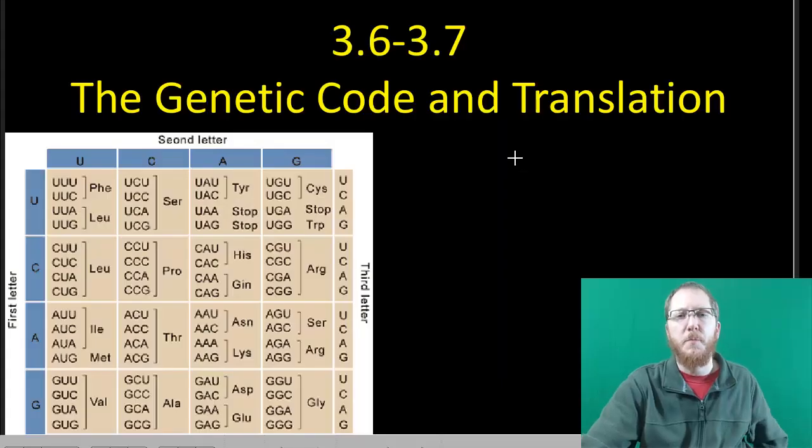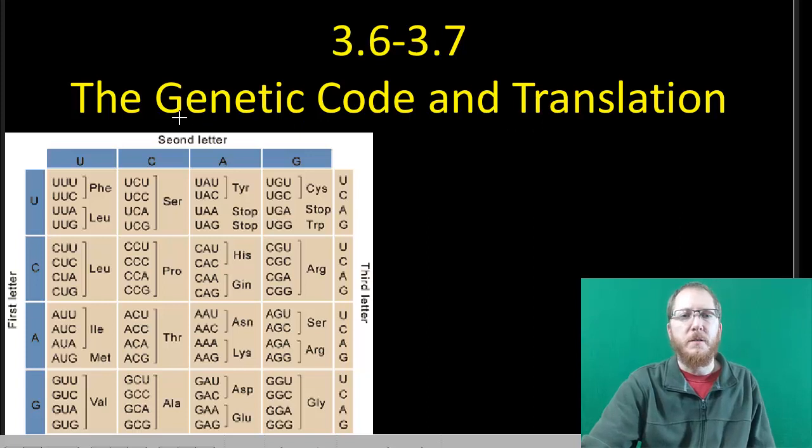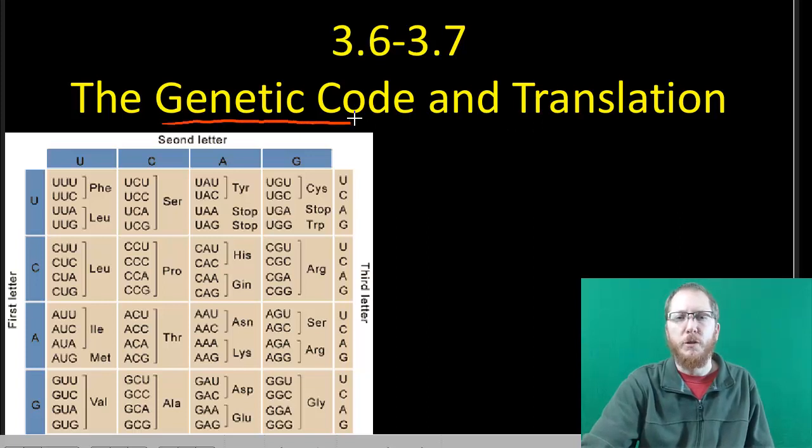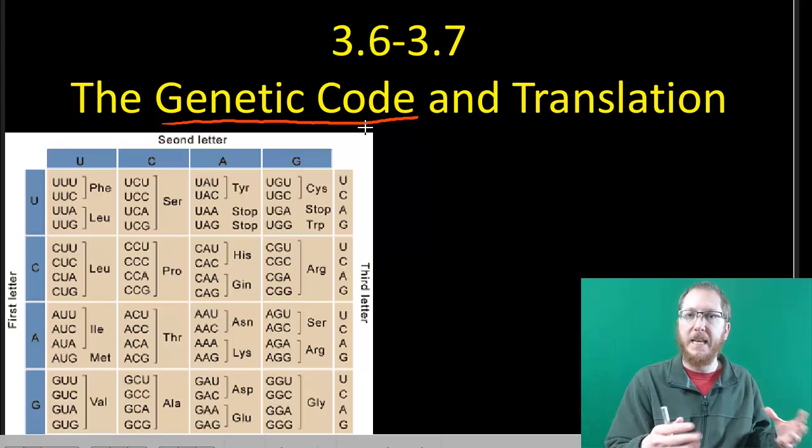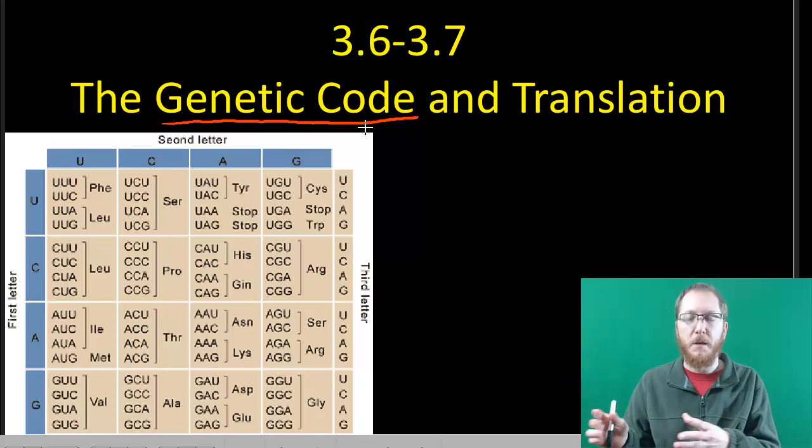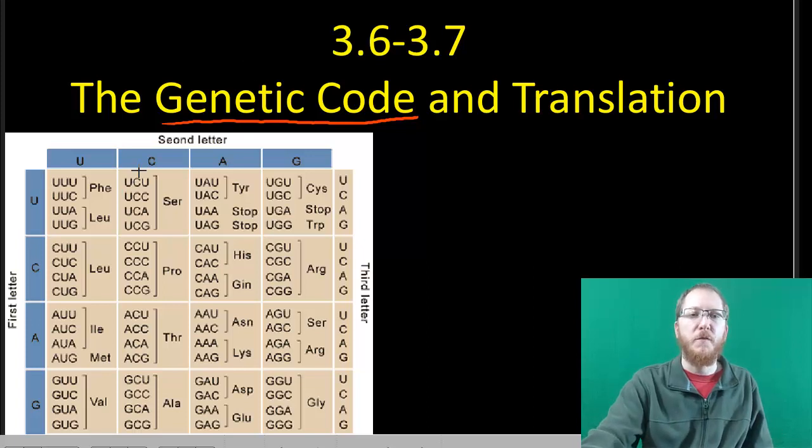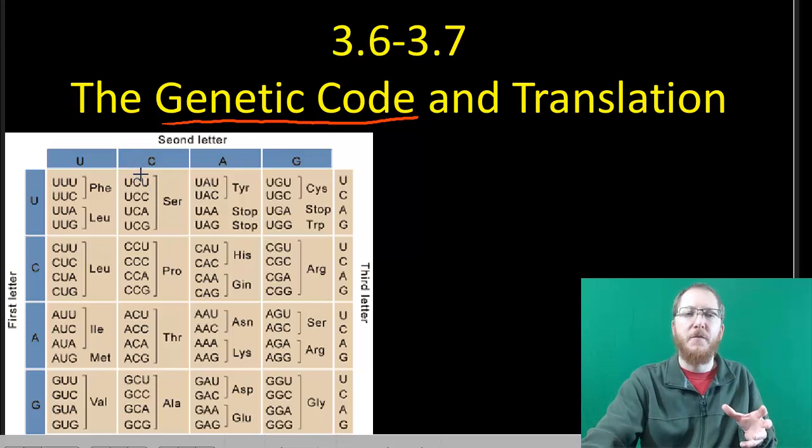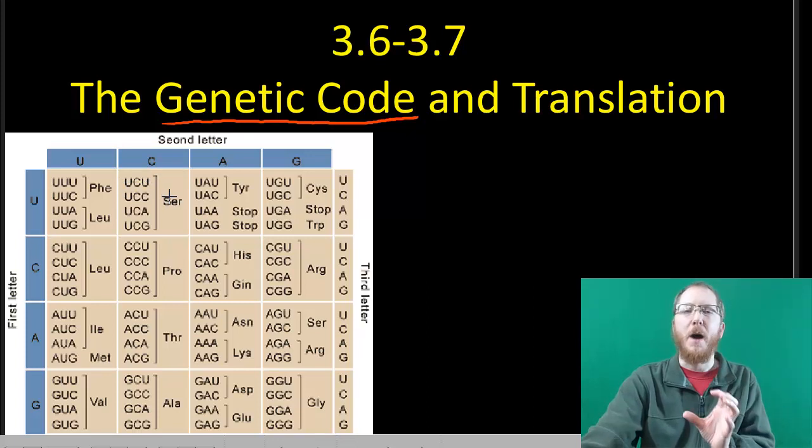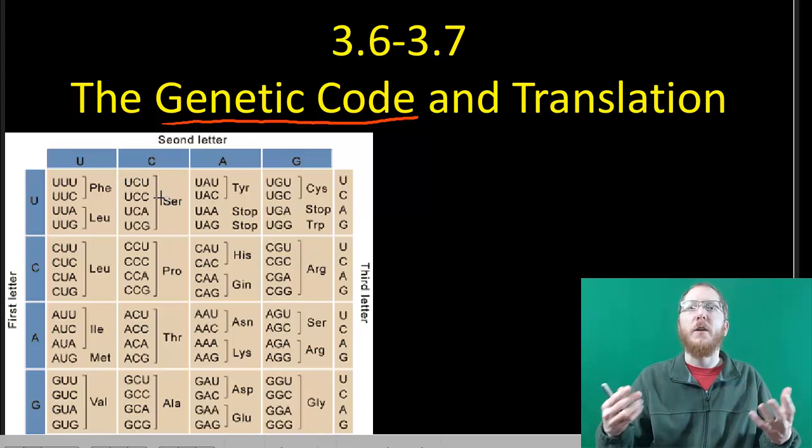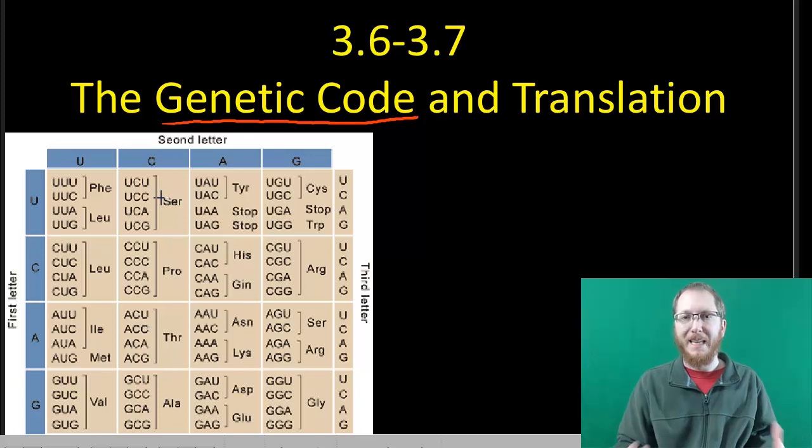Welcome to Section 3.6 and 3.7. In 3.6 we'll talk about the genetic code, which is just really this code that links nucleotides, the stuff that DNA and RNA are made of, to proteins, which are composed of amino acids. And so that's why it's called translation.